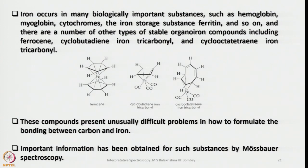There are a number of stable organo-iron compounds, as simple as ferrocene, cyclobutadiene iron tricarbonyl, or cyclooctatetraene iron tricarbonyl. For example, Fe(CO)₅ is an 18-electron species with the metal in the zero-valence state. Ferrocene is also an 18-electron species with iron in the +2 state. These compounds present unusually difficult problems in formulating the bonding between carbon and iron, but important information has been obtained by Mössbauer spectroscopy. In all these compounds, Mössbauer spectroscopy can be used as a probe to analyze the molecules.